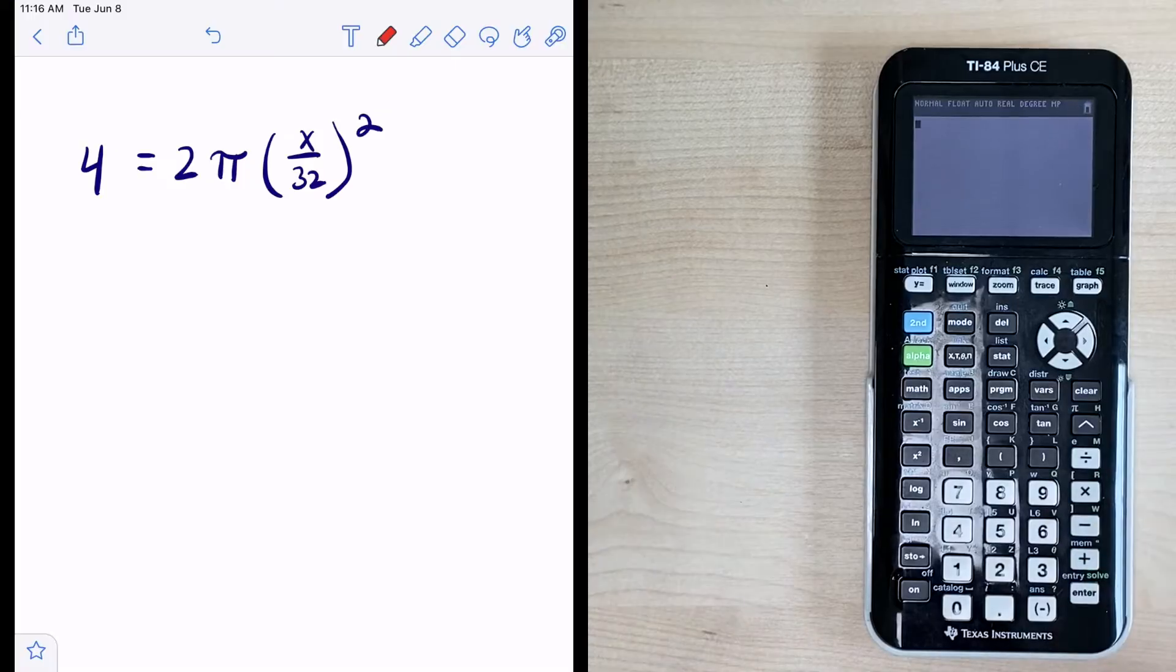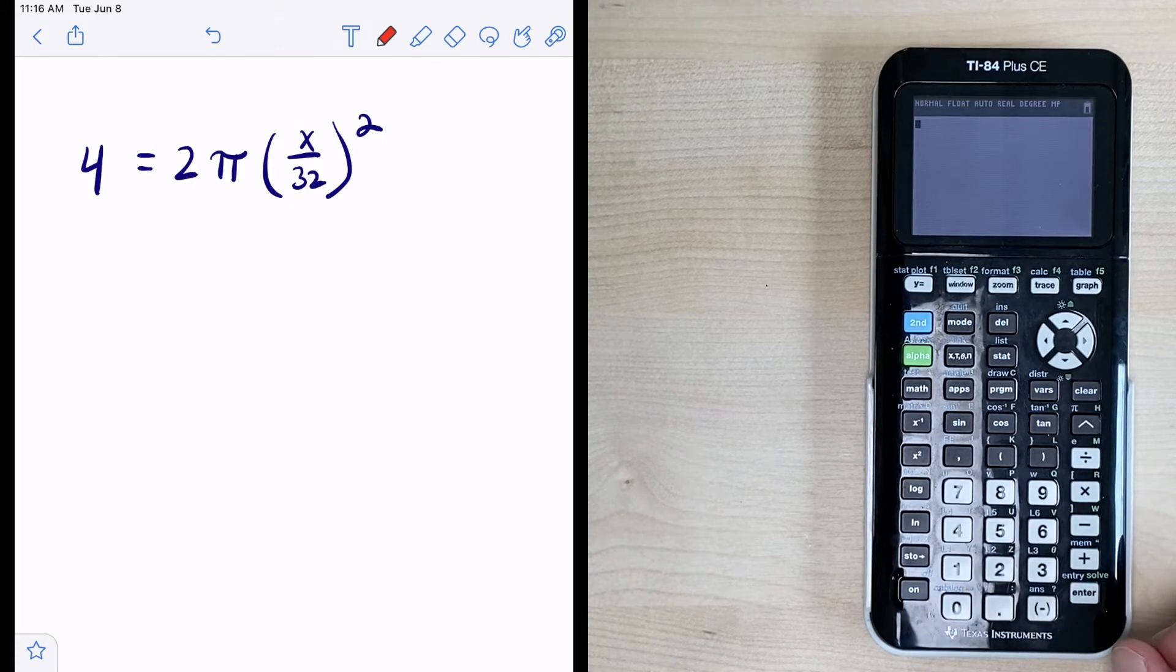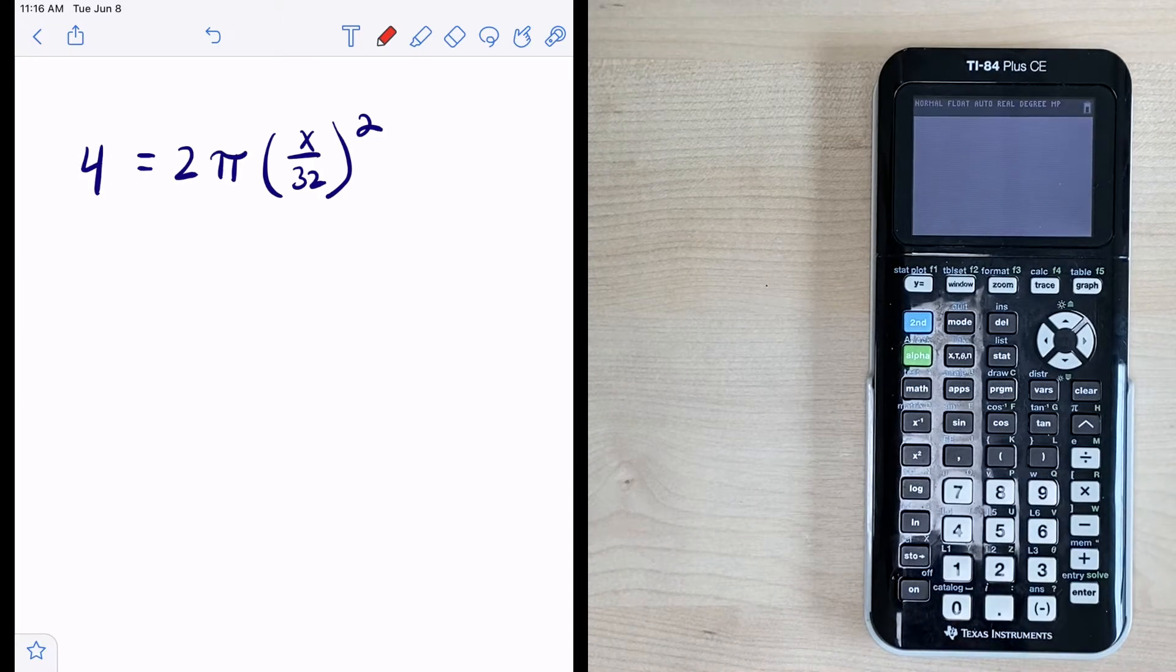All right so now let's look at an example. Okay so we have this problem over here that says 4 equals 2π times x divided by 32 and that quantity is squared. Okay so if we're looking at this problem the first thing we would need to do is divide both sides by 2π.